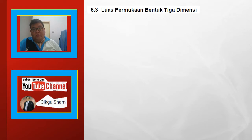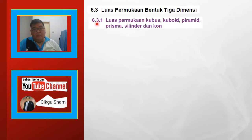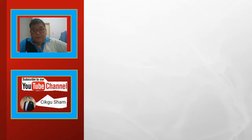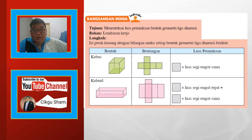6.3 luas permukaan 3 dimensi. 6.3.1: Terlihat luas permukaan kubus, kuboid, piramid, prisma, selinder dan kon. Standard pembelajaran: menerbitkan rumus luas permukaan kubus, kuboid, piramid, prisma, selinder dan kon, dan seterusnya menentukan luas permukaan bentuk tersebut. Dan sangat minda menentukan luas permukaan bentuk geometri 3 dimensi — lembaran kerja, isi petak kosong dengan bilangan muka setiap bentuk geometri 3 dimensi berikut.